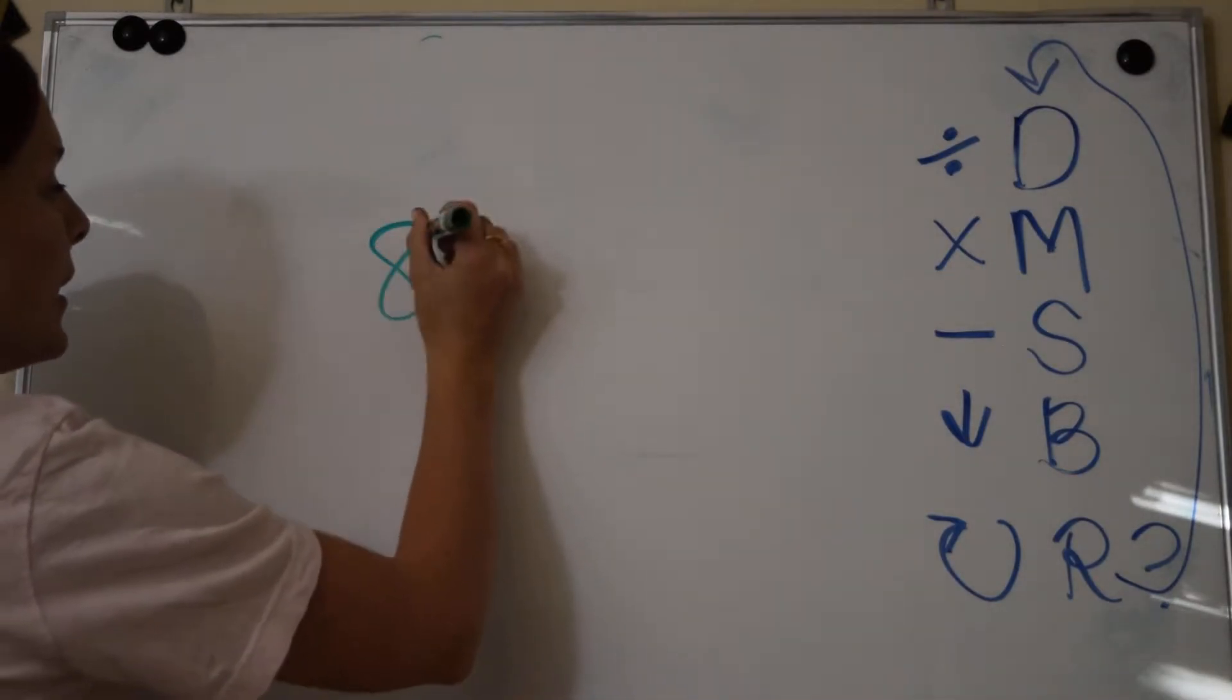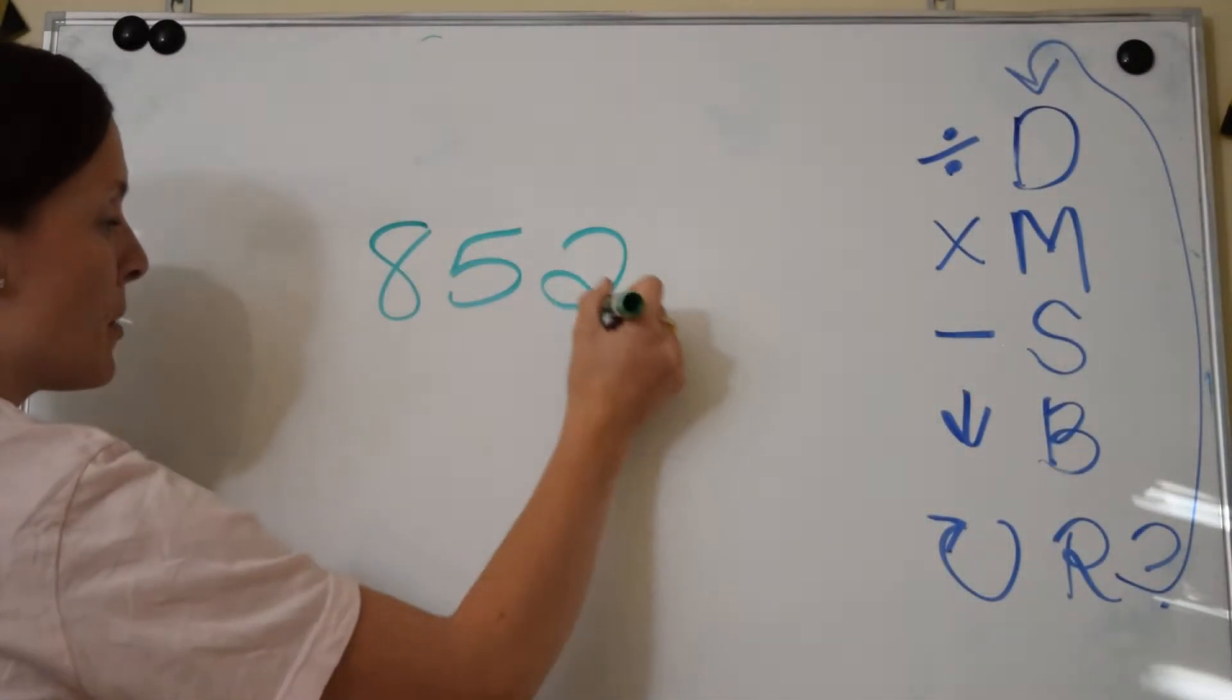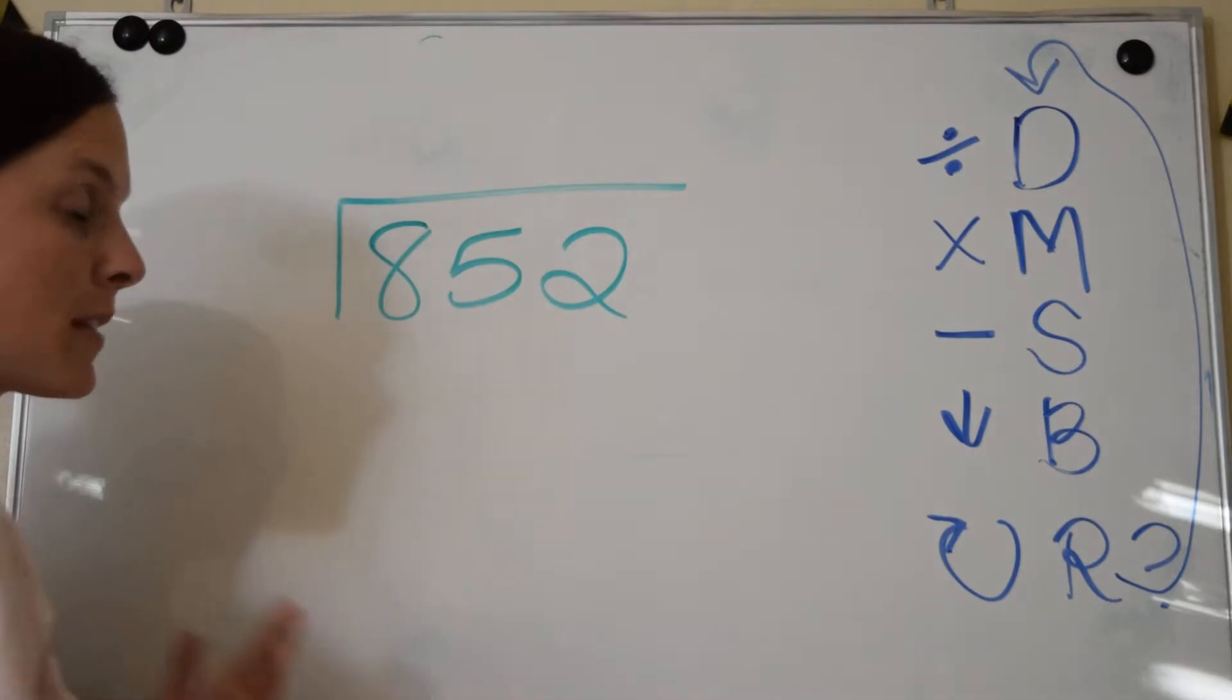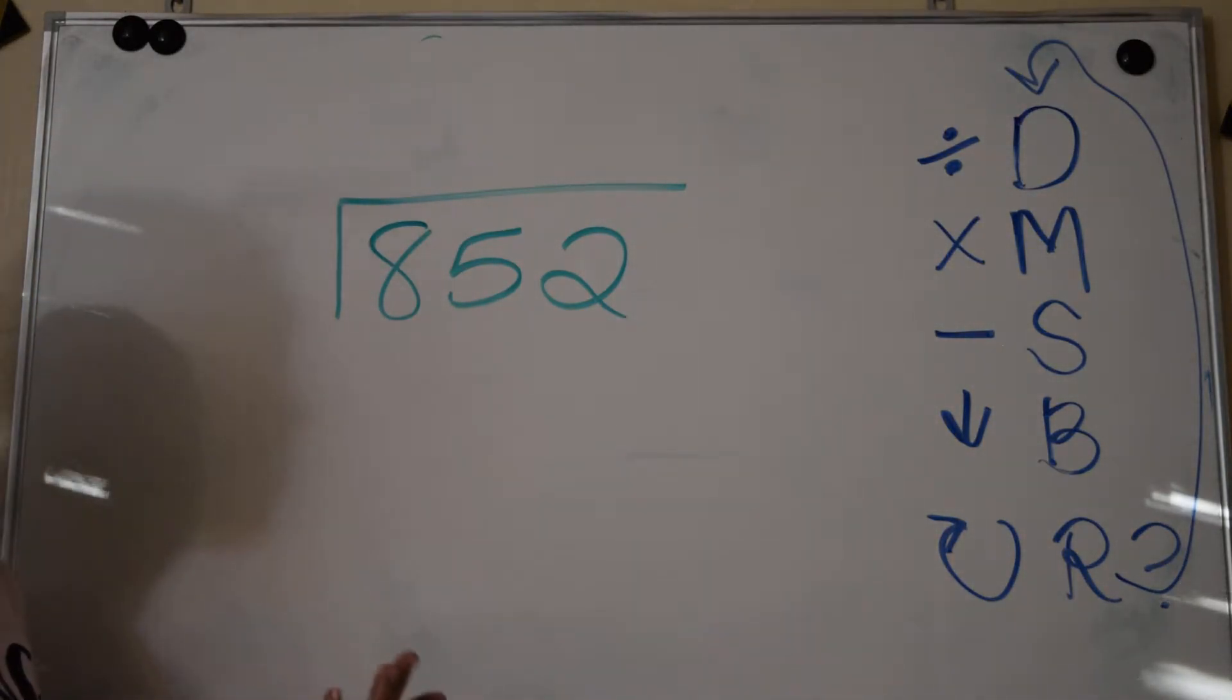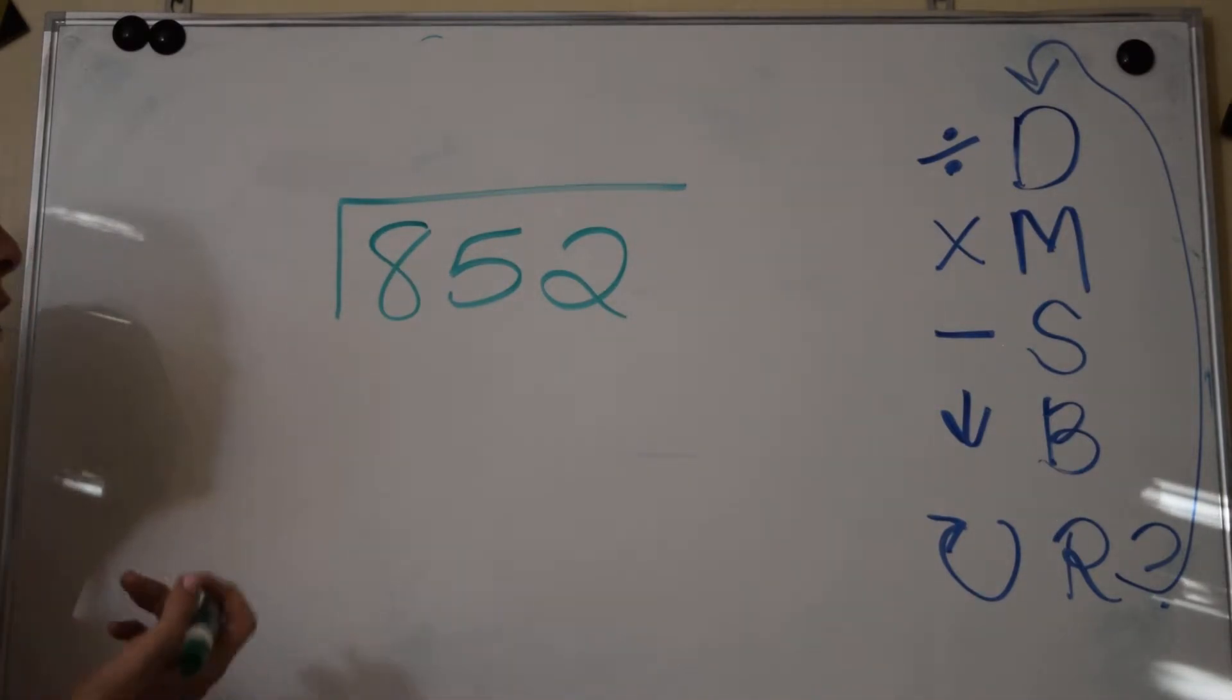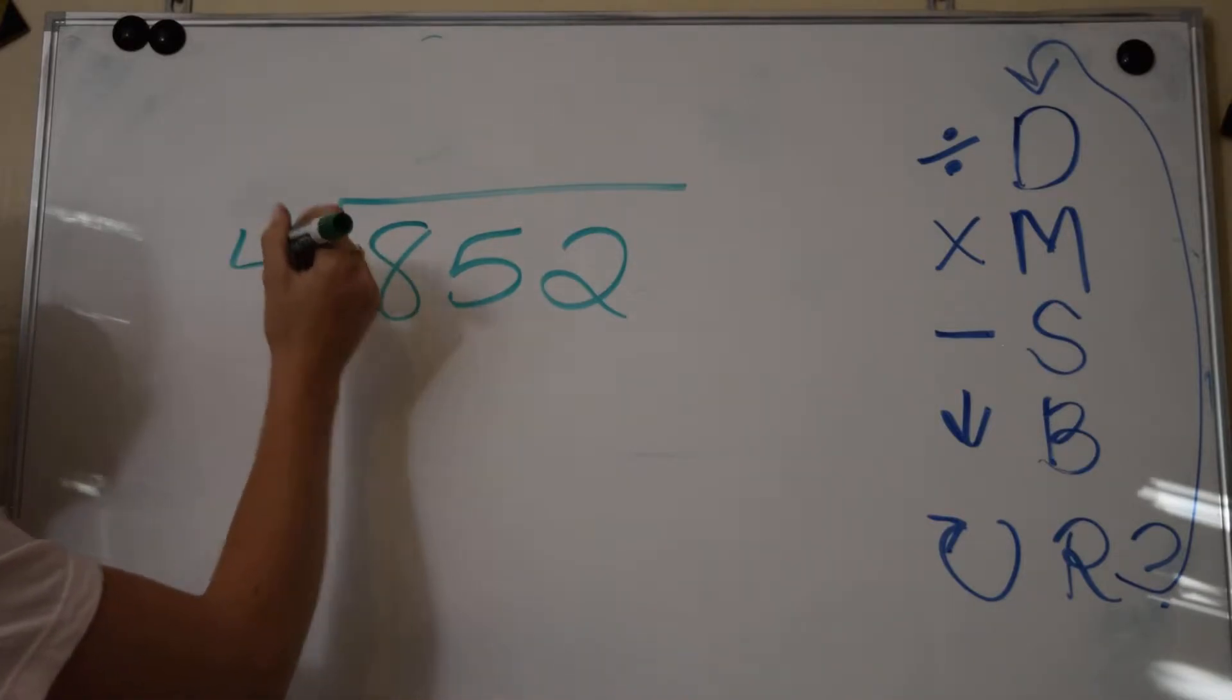Keep in mind that some of your answers might come out with remainders, some of them might not. There's always ways you can go back to check. You can always work backwards with multiplication to make sure you solved right, and I will show you that with this example.